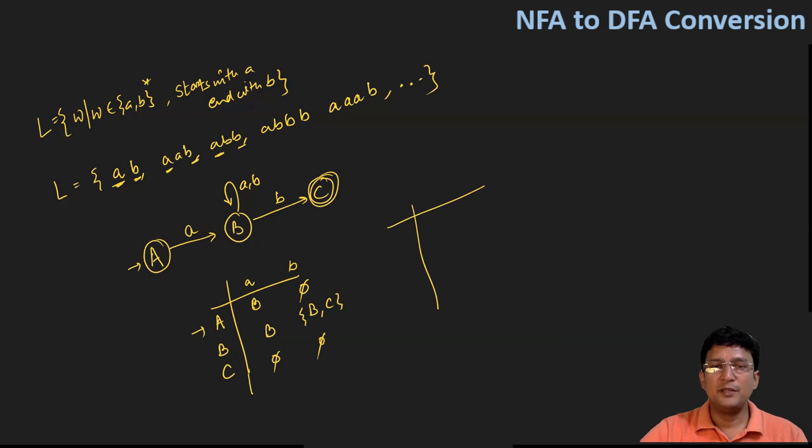So now if I have to draw the DFA for this, let's first write the start state only. Start state on getting symbol small a goes to state B, and start state A on symbol b is undefined, so I'll make it as a dead state D.